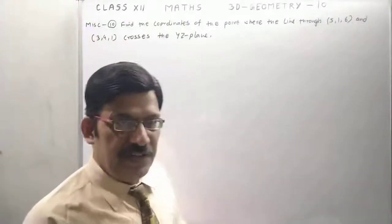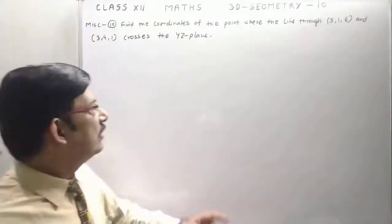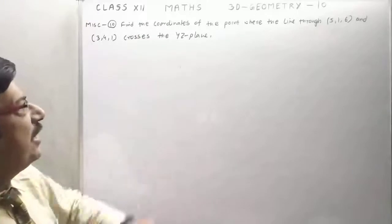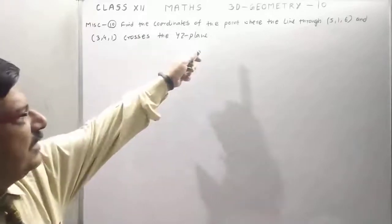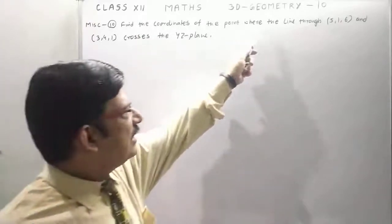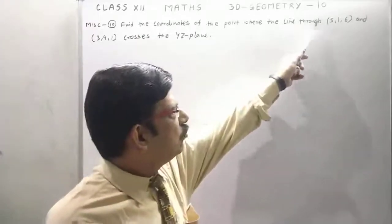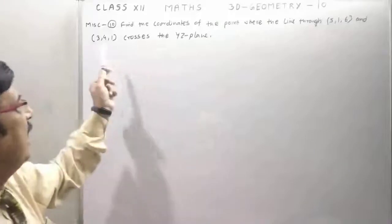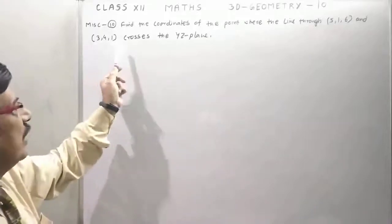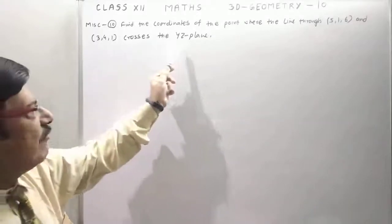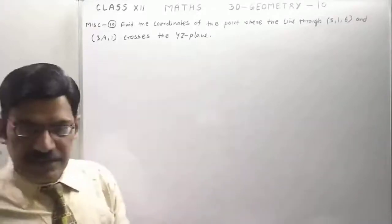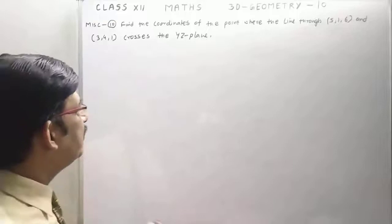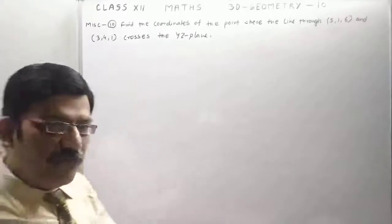Students, let's take a very interesting question: find the coordinate of the point where the line through (5, 1, 6) and (3, 4, 1) crosses the YZ plane. For this, first of all we have to find the equation of the line.